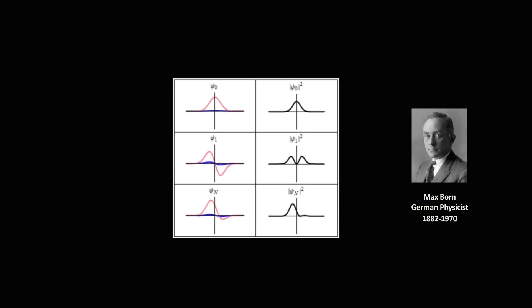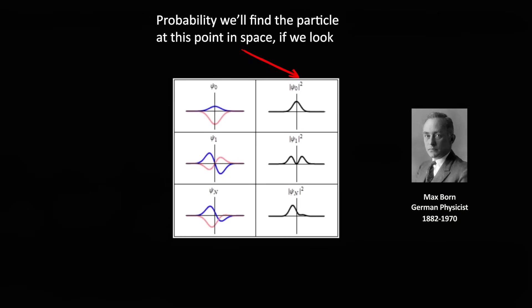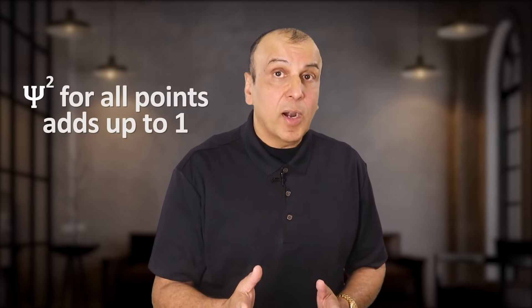German physicist Max Born said that the square of the wave function isn't the density of the particle, instead it's the probability. It tells us the probability that we'll find the particle at that point in space if we look. If we add up psi squared for every point in space, it will equal 1. Meaning that if we look everywhere, we are bound to find the particle somewhere.